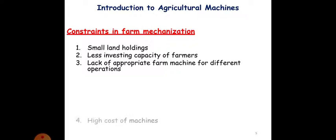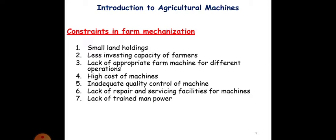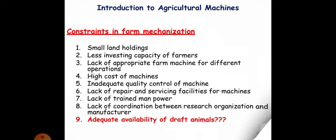Inadequate quality control of machine. Lack of repair and servicing facilities for the machines. Lack of trained manpower, that is skilled labor, is again a constraint. Lack of coordination between research organization and manufacturer is again a constraint. And lastly, adequate availability of draft animals becomes a main constraint in farm mechanization.